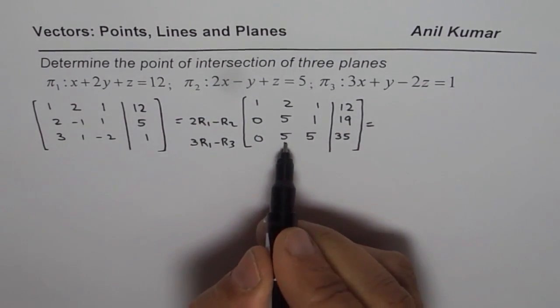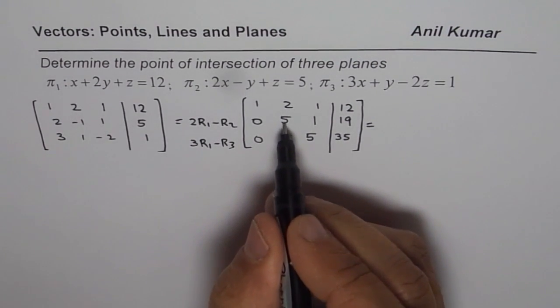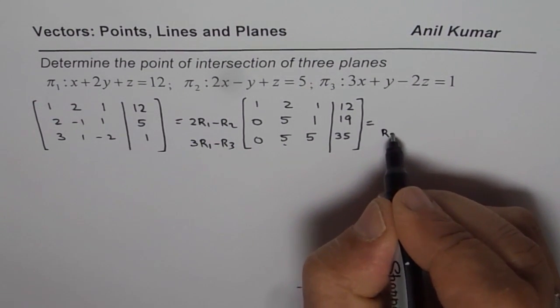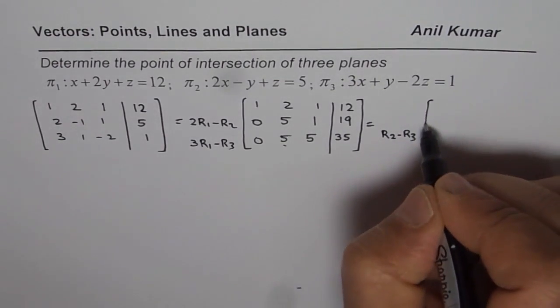Now we need a zero here. So that should be simpler. Here we can do R2 minus R3 to get zero here. So now we will do R2 minus R3 to get a zero here in that corner.